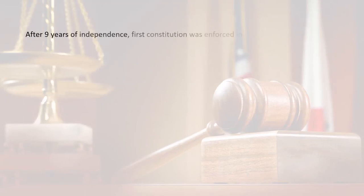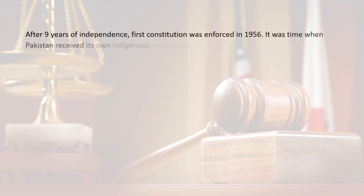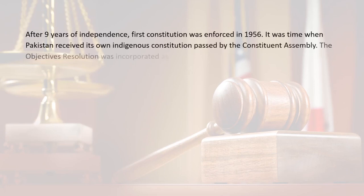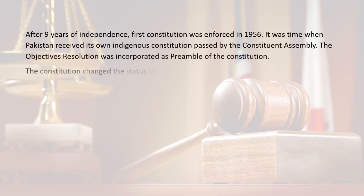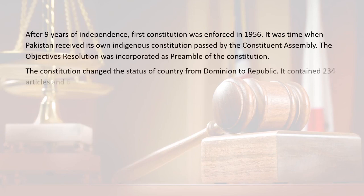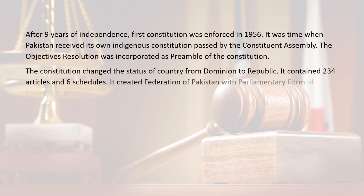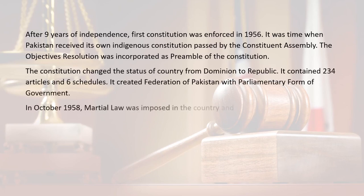After nine years of independence, the first constitution was enforced in 1956. It was the time when Pakistan received its own indigenous constitution passed by the Constituent Assembly. The Objectives Resolution was incorporated as the preamble of the constitution. The constitution changed the status of the country from dominion to republic. It contained 234 articles and six schedules, and created a Federation of Pakistan with a parliamentary form of government. In October 1958, martial law was imposed and the constitution of 1956 stood abrogated.